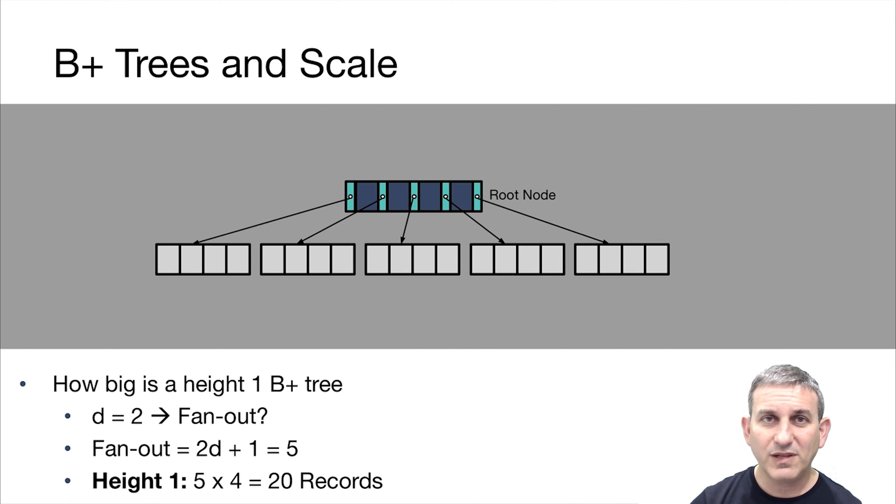Let's talk about B-plus trees and how they scale. So here's a height 1 B-plus tree. How much does it hold? Well, it's got order 2, which means fanout 5, 2d plus 1. And it's height 1, so it's got a root and 5 leaves, each of which hold 4 records. And so that's a total of 20 records here.